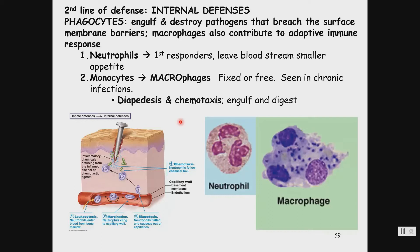The second line of defense consists of internal defenses. If something has penetrated through a wound in the skin or through the mucosa, we have our nonspecific phagocytic cells. Phago means eat, so these are cells that eat. They're going to engulf and destroy pathogens that breach that surface.